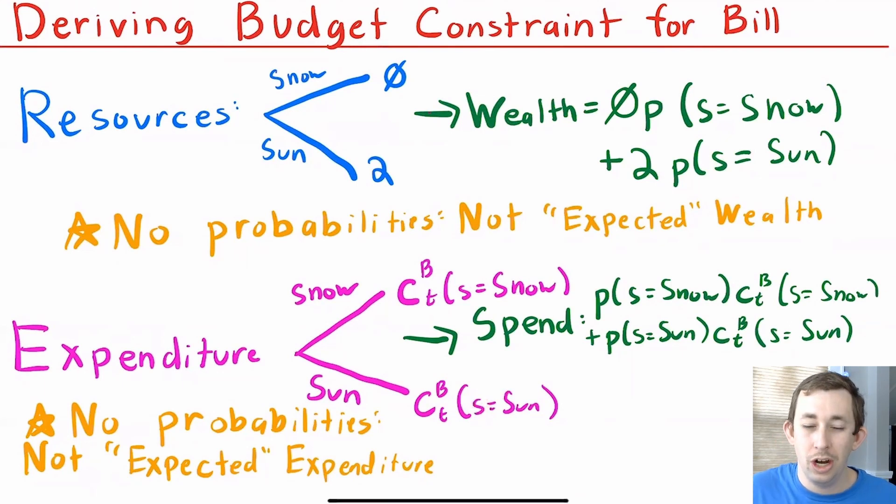He's going to buy both of them, right? Because Bill doesn't know if it's going to be sunny or snowy tomorrow. So he wants to guard against that risk. So it makes sense that he should buy some frozen and some dry coconuts. And the probabilities should factor into that decision. But in terms of his actual expenditure, there are no probabilities to be found anywhere in this budget constraint.